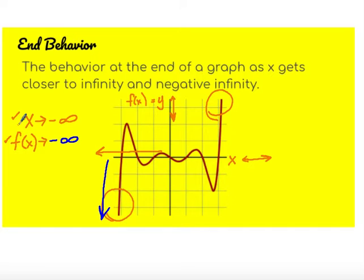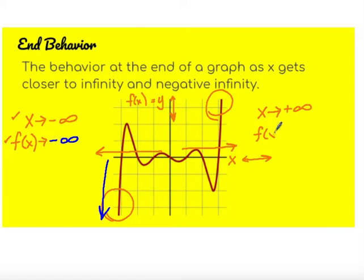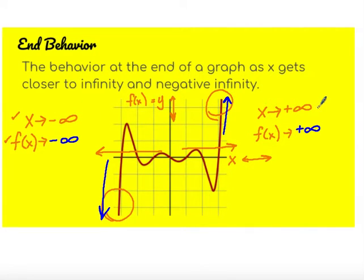Now let's investigate what's happening on the right side. As we move to the right of our function, mathematically that means as x is approaching positive infinity — that's the mathematical way to say to the right. The function is approaching upward, so it's going to be headed towards positive infinity. As we move to the right-hand side, our function is moving up. That's telling us what the end behavior of the function is.